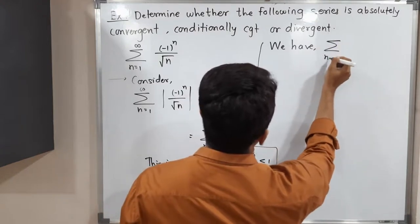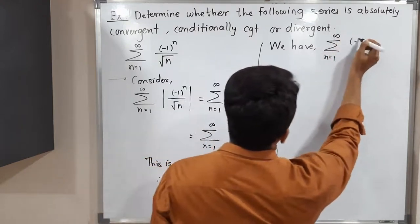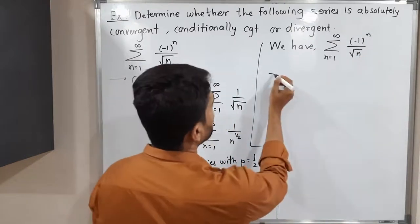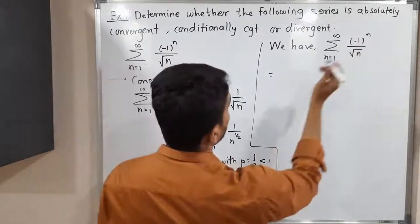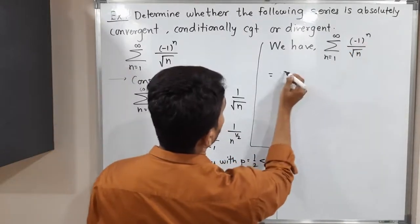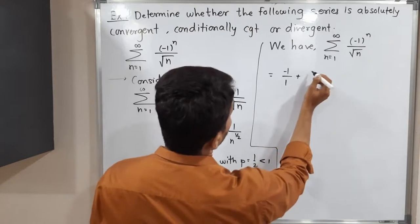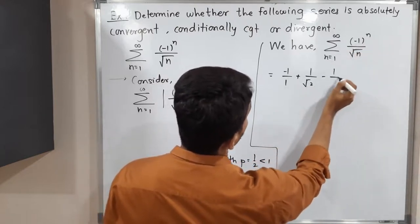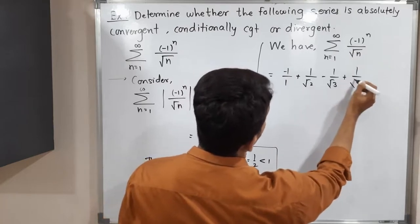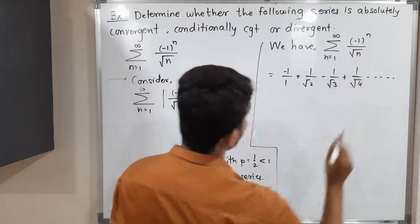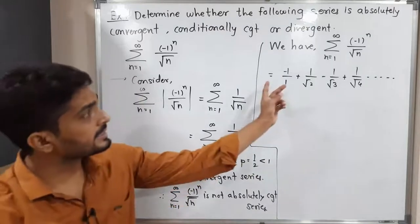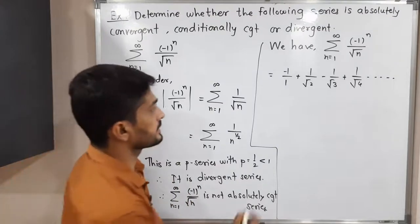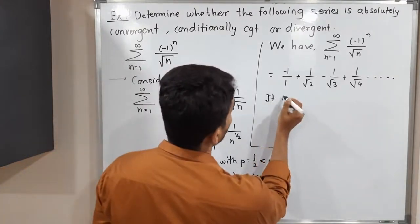The given series is Σ from n=1 to infinity of (-1)^n / √n. Expanding it: -1/√1 + 1/√2 - 1/√3 + 1/√4 and so on. We can clearly see alternating minus and plus signs, so this is an alternating series.